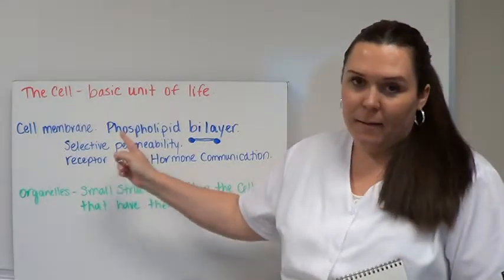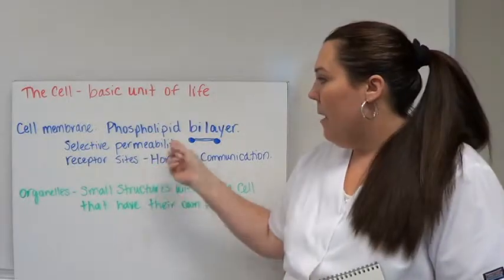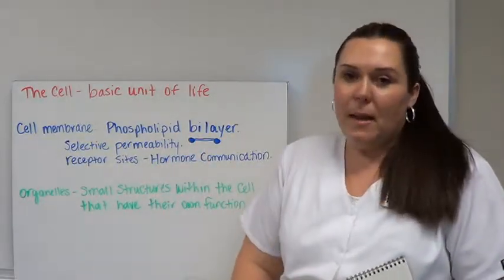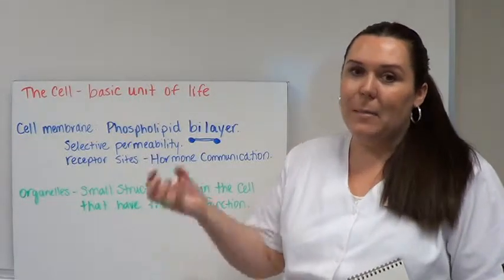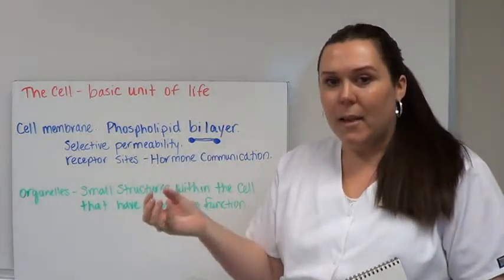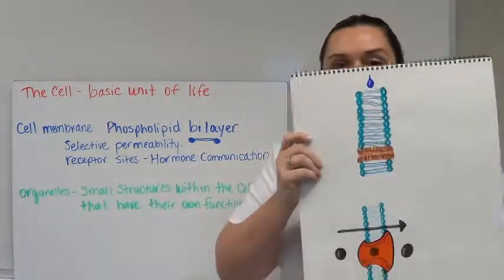We start first with the cell membrane. The cell membrane is covering the outer shell of the cell. The cell membrane is made up of a phospholipid bilayer. That means there are two layers of lipids. We know lipids to be fat. It looks very similar to this.